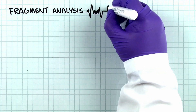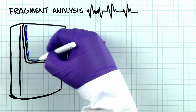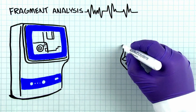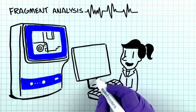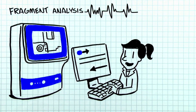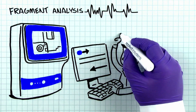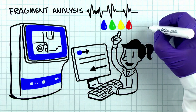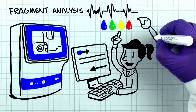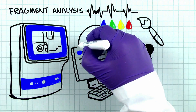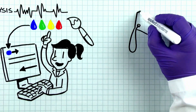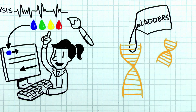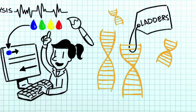To run fragment analysis on a capillary electrophoresis system, you can design probes and primers to flank your region of interest. Typically, fluorescent dyes are attached to the primers or probes, and the fragments are amplified by PCR before the electrophoresis. The size marker is usually labeled with a color different from the colors of the fragments.